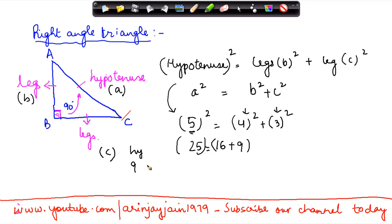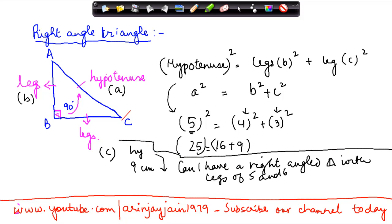Now suppose I was told that the hypotenuse of a triangle is nine centimeters. Can I have a right angle triangle with legs of five and six? Now if this is the case, then this property has to hold true, which means that nine squared is equal to five squared plus six squared.